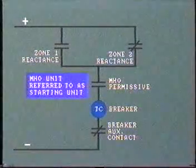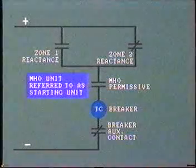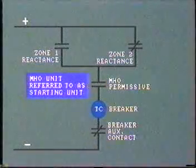Because of this, the Mho unit is often referred to as the starting unit, since it must operate before other units in the relay can trip out the circuit.